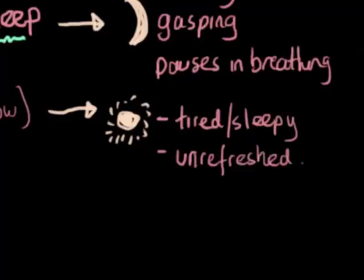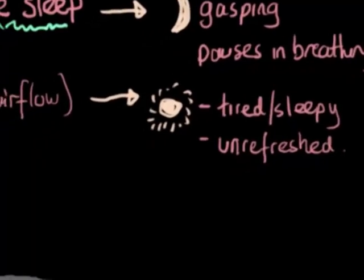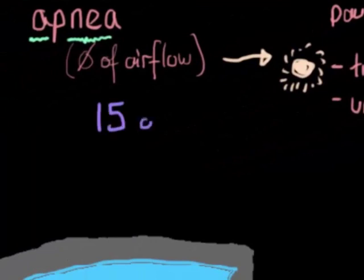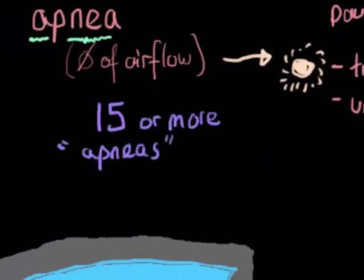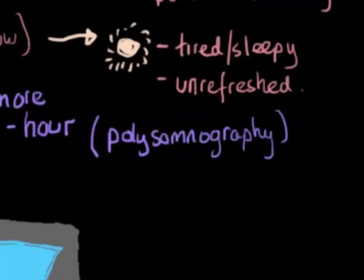And the way that we diagnose it, we do a sleep study or a polysomnography, and what we're looking for is 15 or more of these apneas that are not only pauses in the breathing, but you can also demonstrate evidence of obstruction in the airways per hour. And that's done on the sleep study, on the polysomnography.